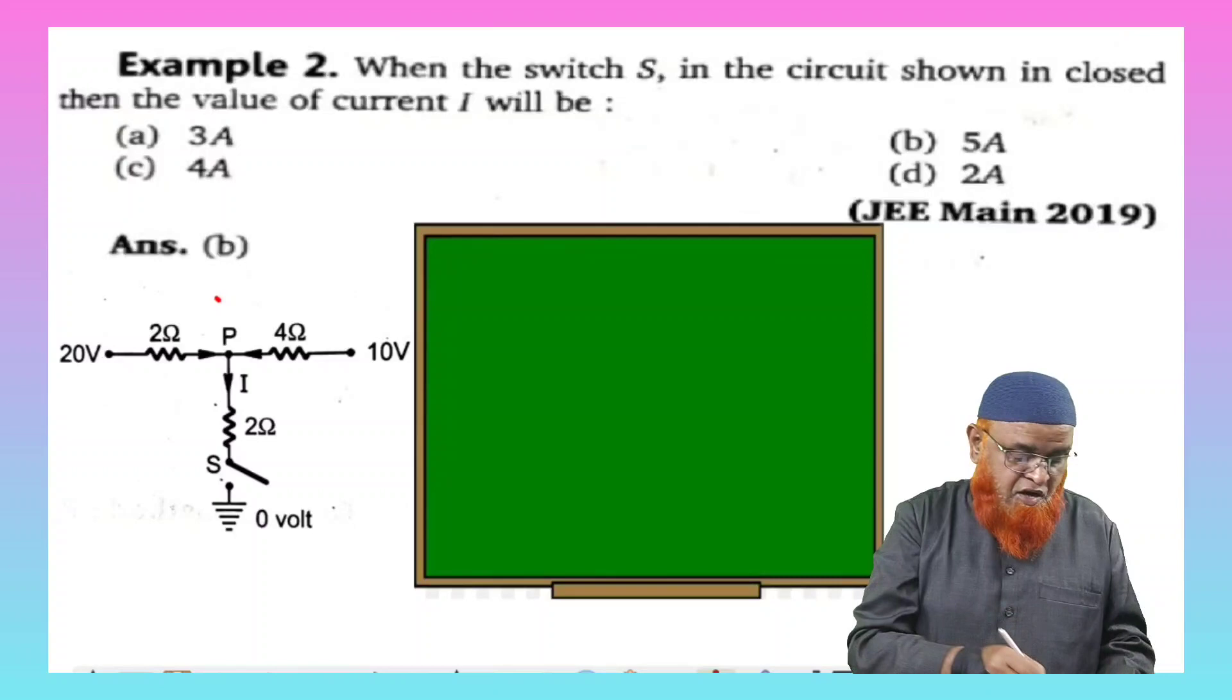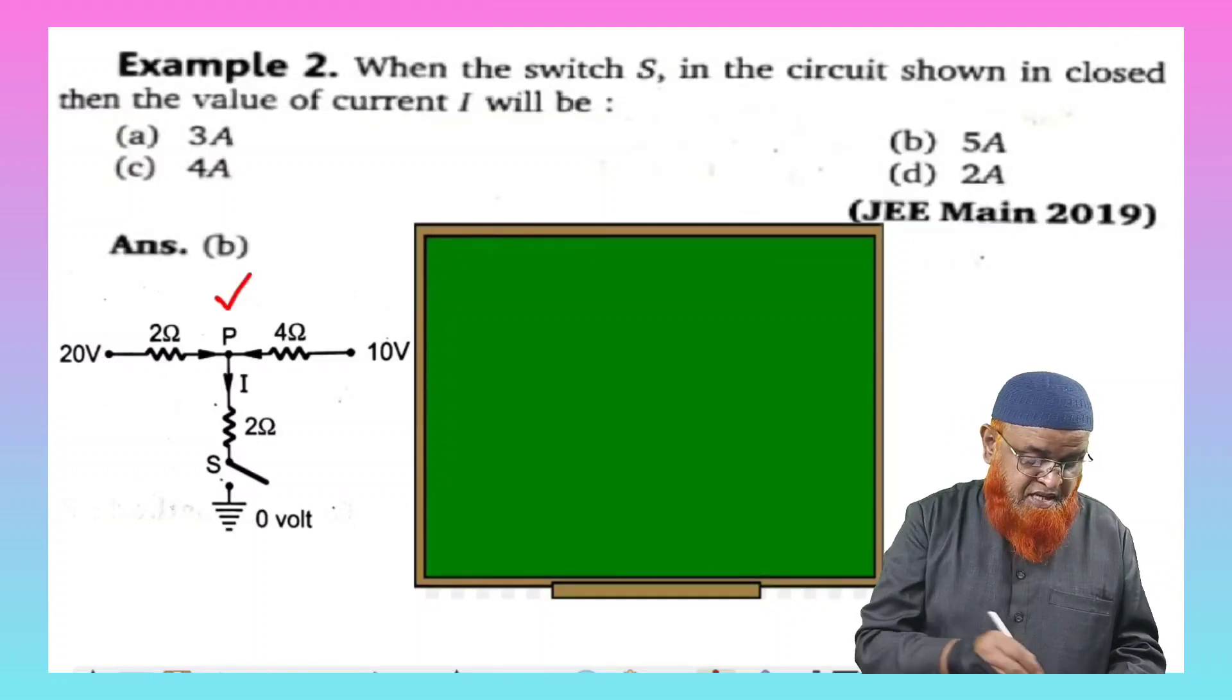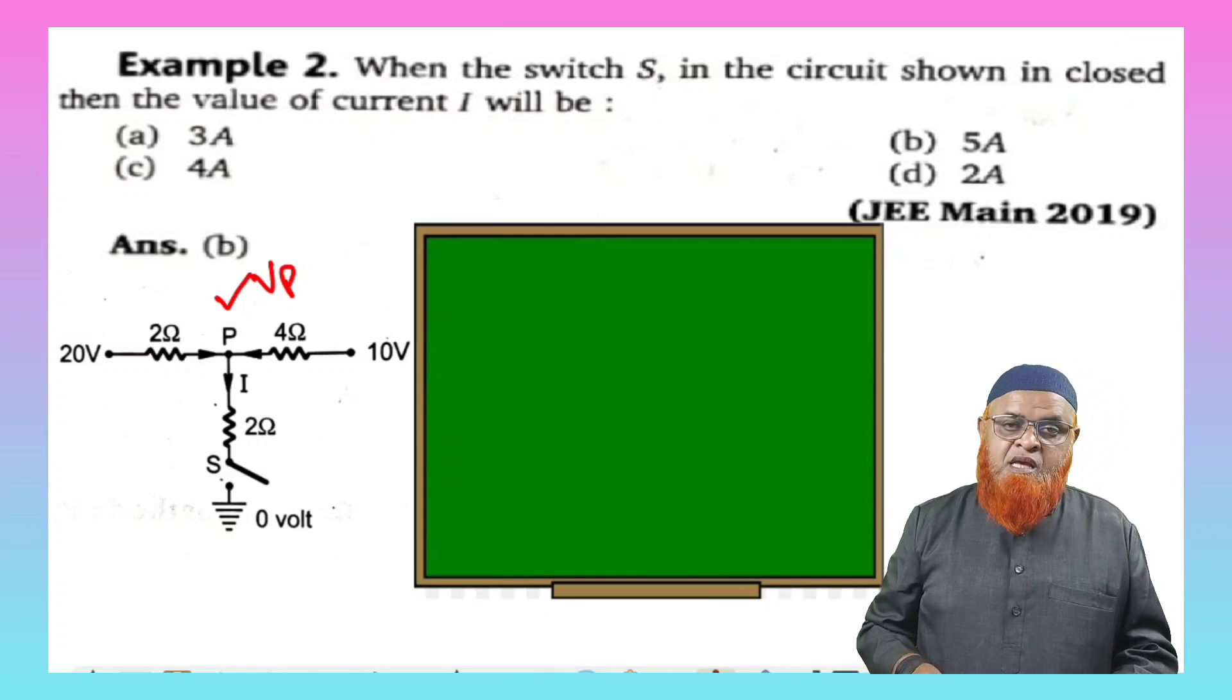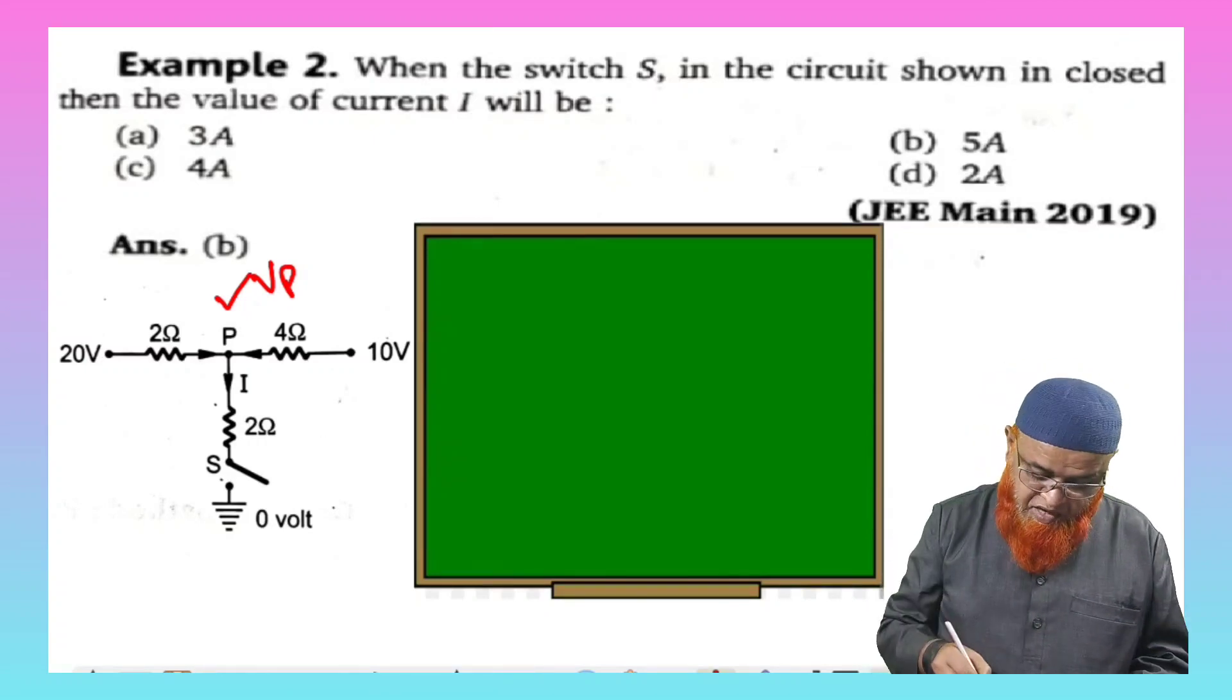First thing in a simple shortcut method, you have to find out what is the potential across P here. That means you have to find out VP. So the simple shortcut method to find out VP is: